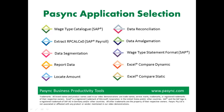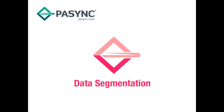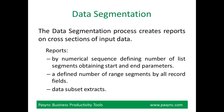Welcome to the Passing Data Segmentation Quick View. The following video is a short demonstration of the steps involved and shows the ease of use when processing. The data segmentation process creates reports on cross-sections of input data: reports by numerical sequence defining number of list segments, obtaining start and end parameters, a defined number of range segments by all record fields, and data subset extracts.